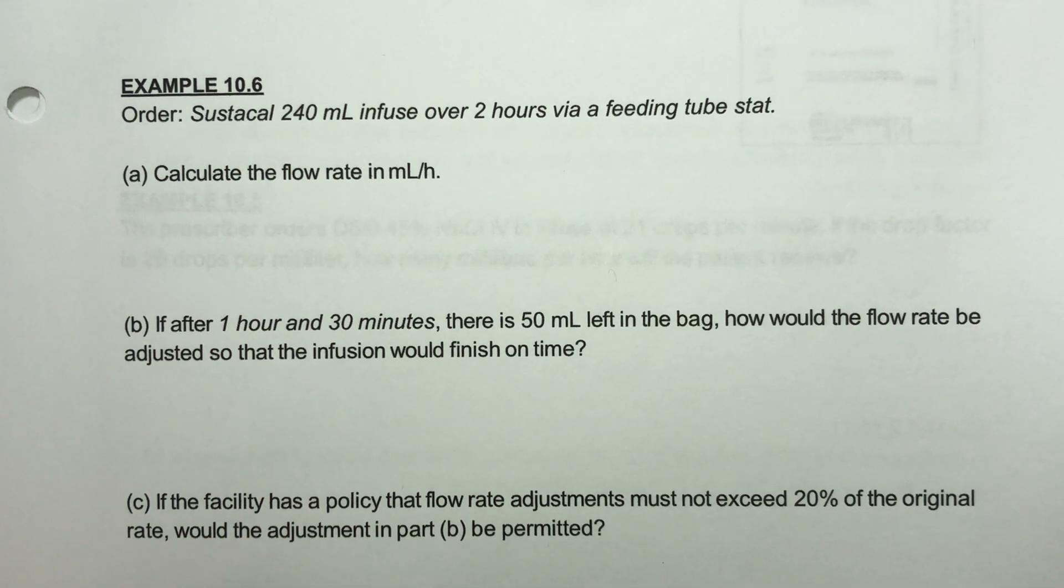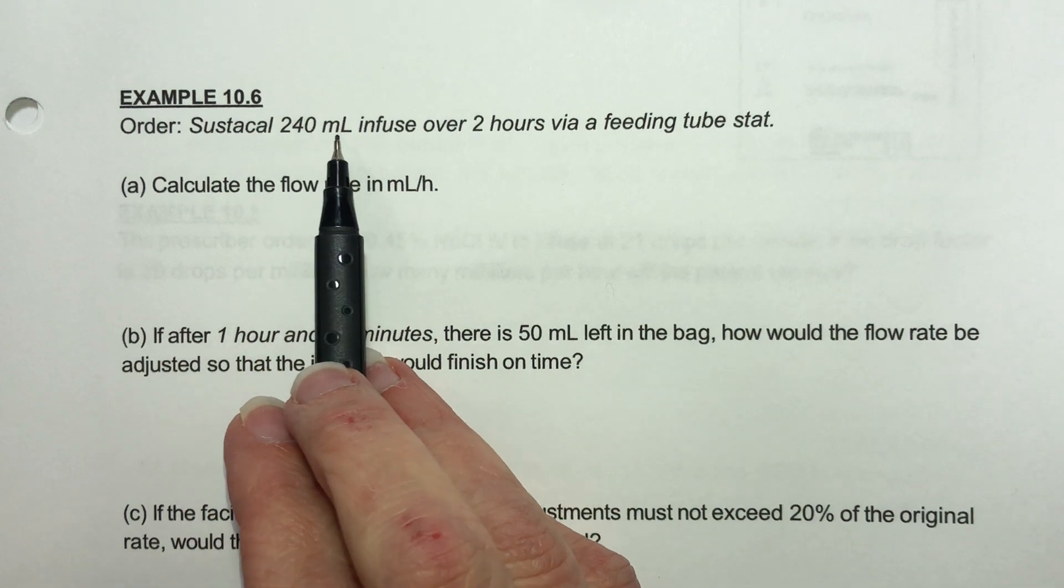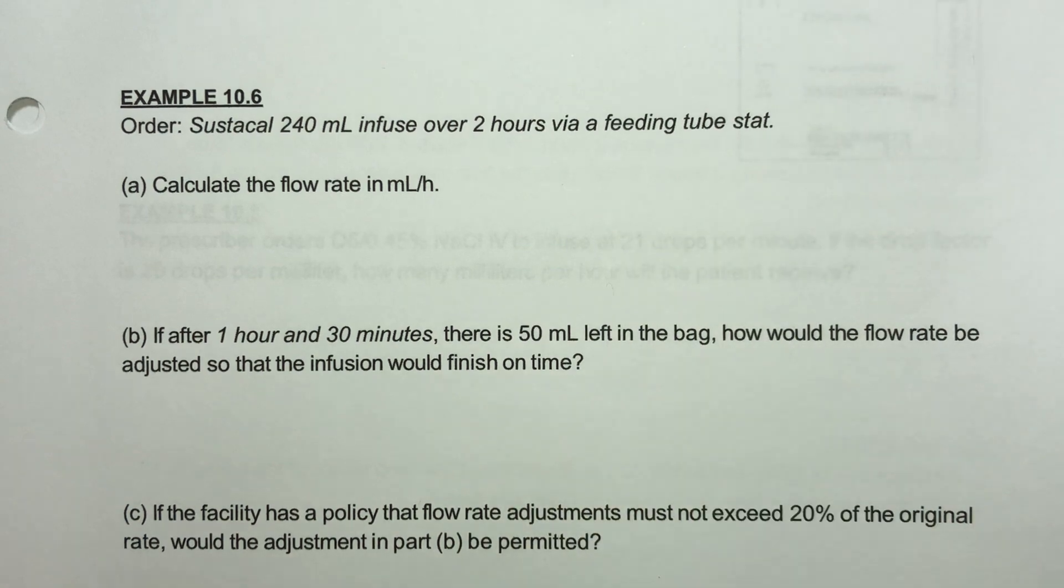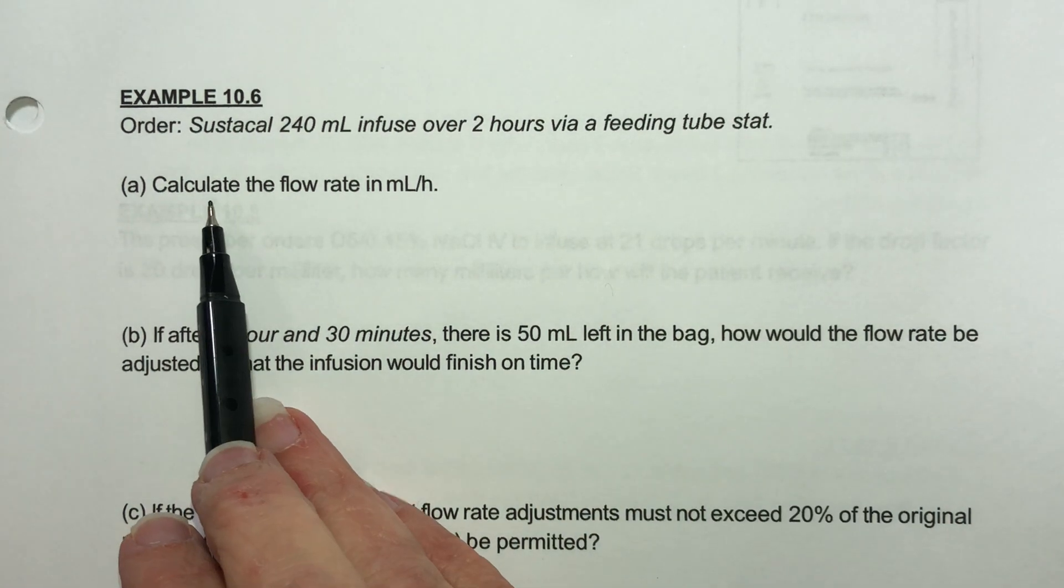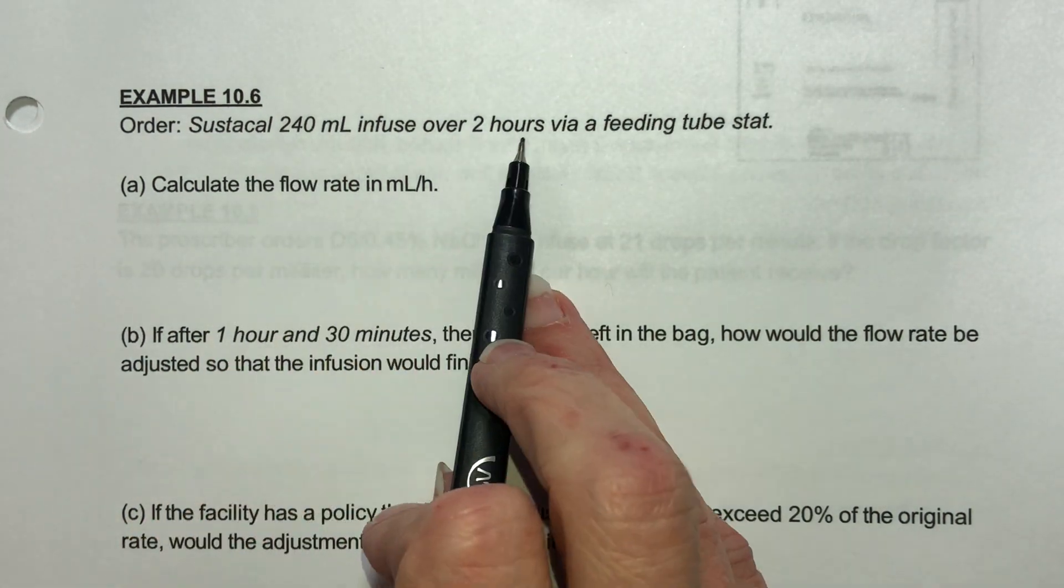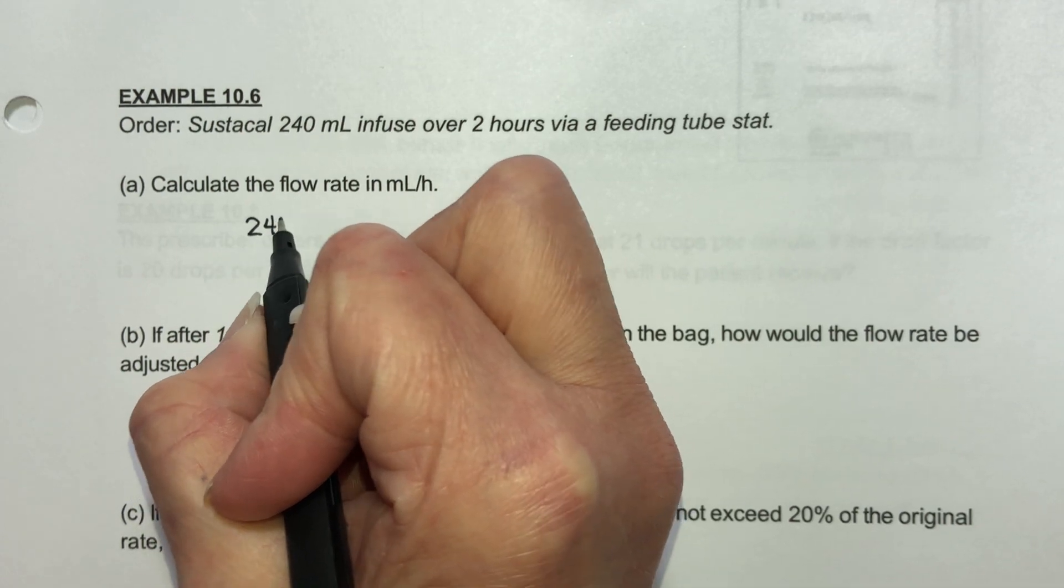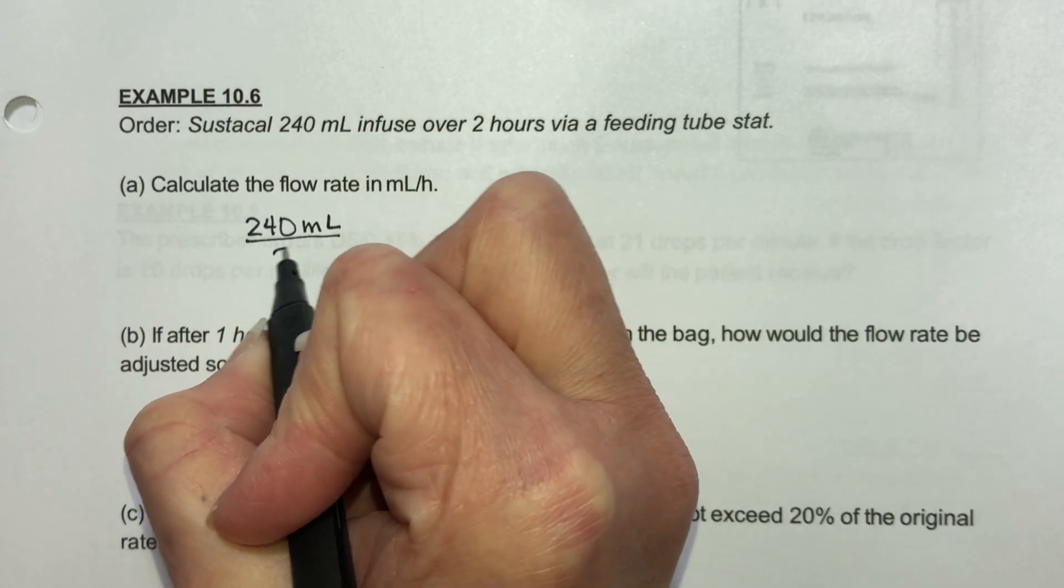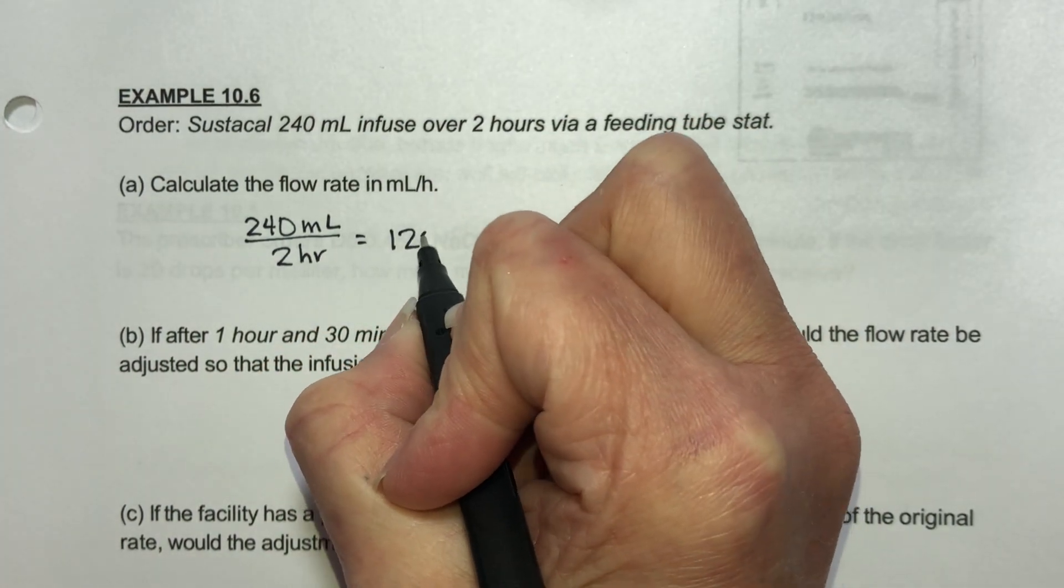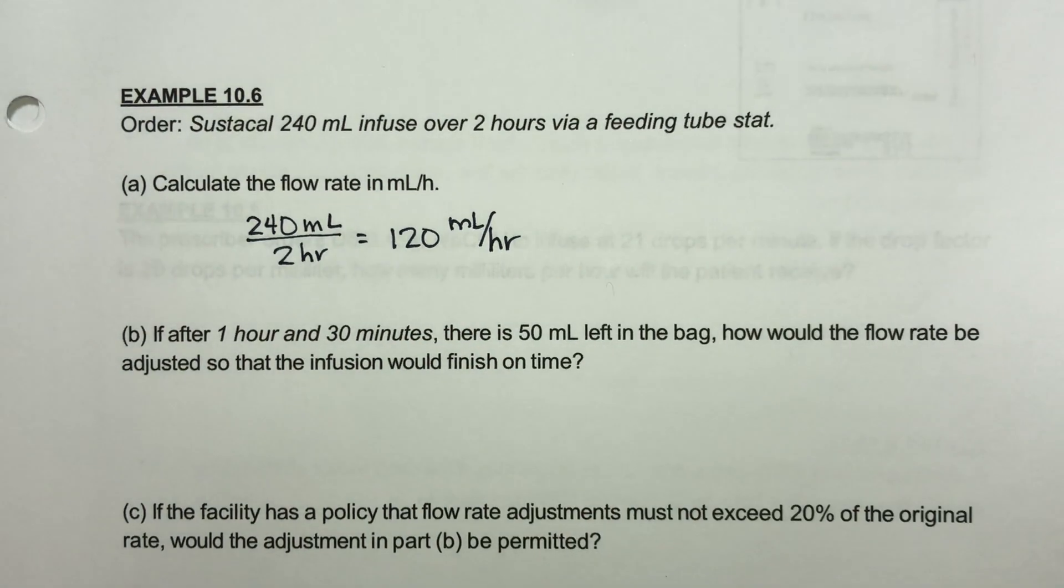10-6. The order is Sestacal 240 milliliters to infuse over two hours by a feeding tube step. We're supposed to calculate the flow rate in milliliters per hour. Well the flow rate is volume over time, so this would be 240 milliliters over two hours, which is 120 milliliters an hour. So that's the answer to that first part.